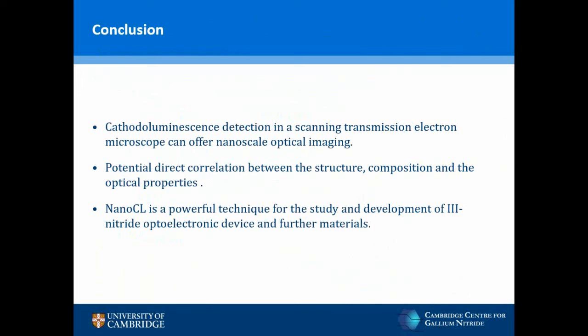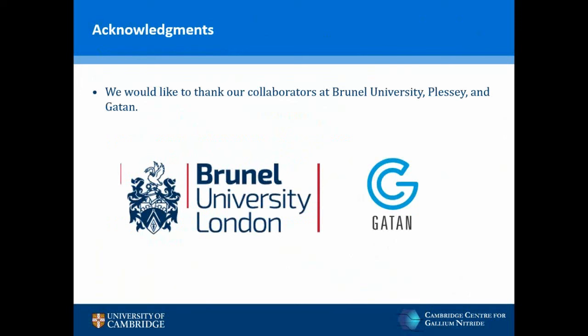In conclusion, we have shown that detecting the cathodoluminescence signal in the scanning transmission electron microscope offers the potential for nanoscale optical imaging to reveal the optical characteristics of individual nanostructures. Simultaneously recording STEM and EELS signals allows direct correlation of optical characteristics with structural and compositional properties. Nanocathodoluminescence is therefore a powerful technique for the development of nitride optoelectronic devices. I would like to thank everyone from the University of Cambridge who supported this work, in particular Spark Shang now at Düsseldorf University, our collaborators at Brunel University — Ian Boyd and Ashley Hawkins — and everyone at GATAN, in particular David Stove.